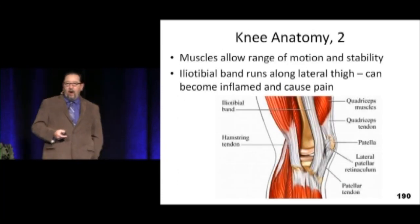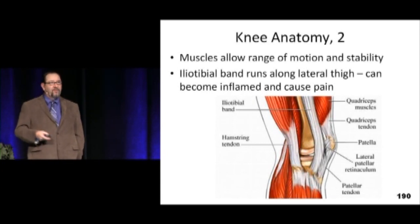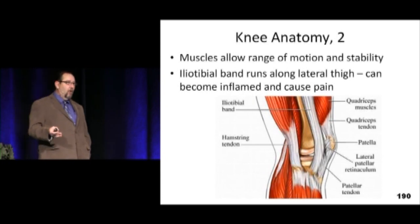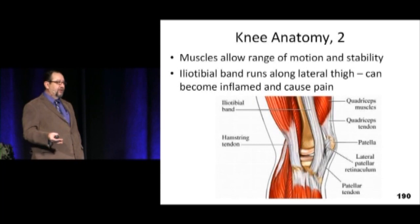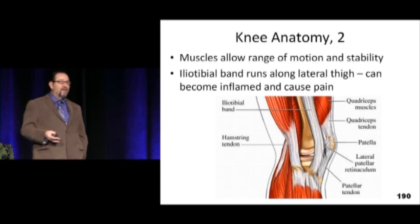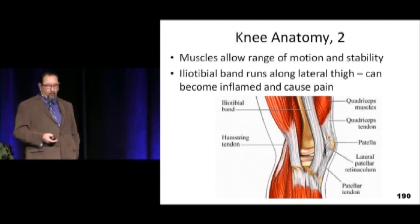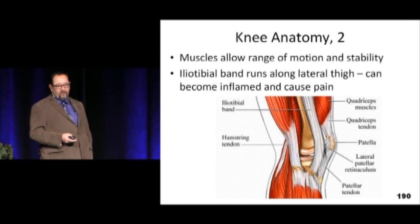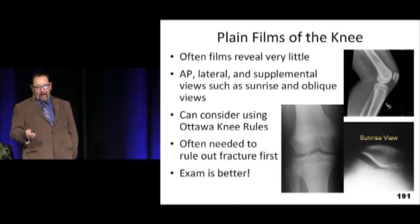Muscles are important to stability as well. When people have a ligamentous injury to their knee, after fixing or immobilizing it, a prolonged period of rehab to strengthen the muscles crossing the knee — adding muscle strength to knee stability — is quite important. The iliotibial band runs along the lateral thigh and can become inflamed and cause pain as well.